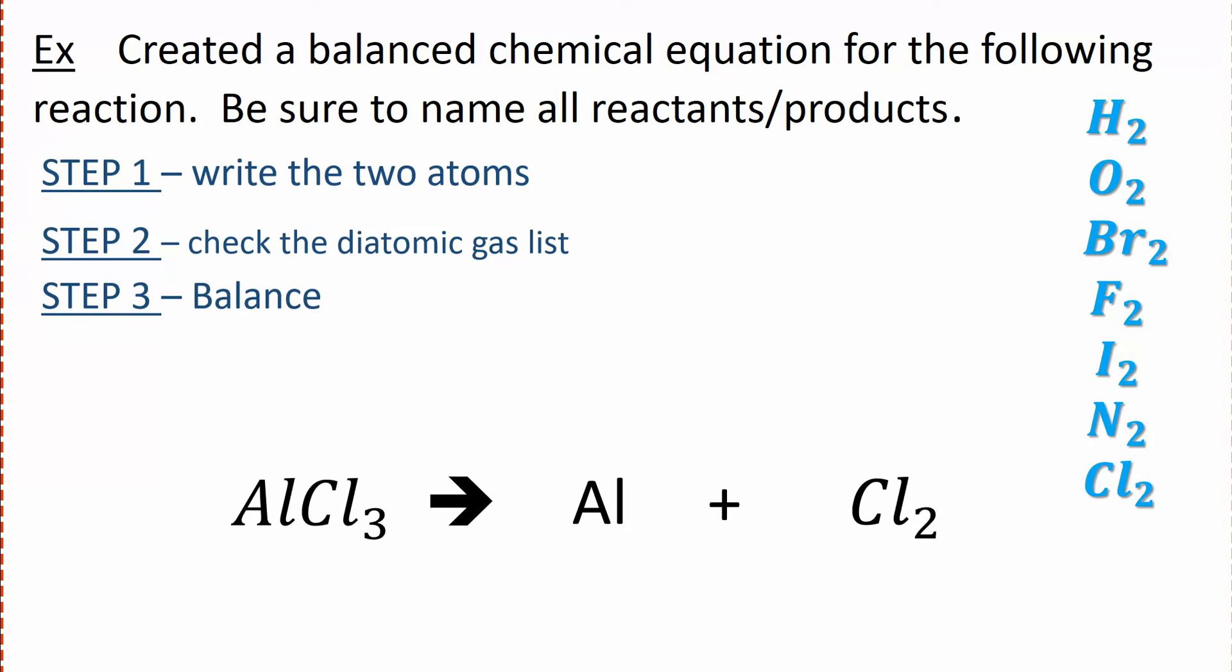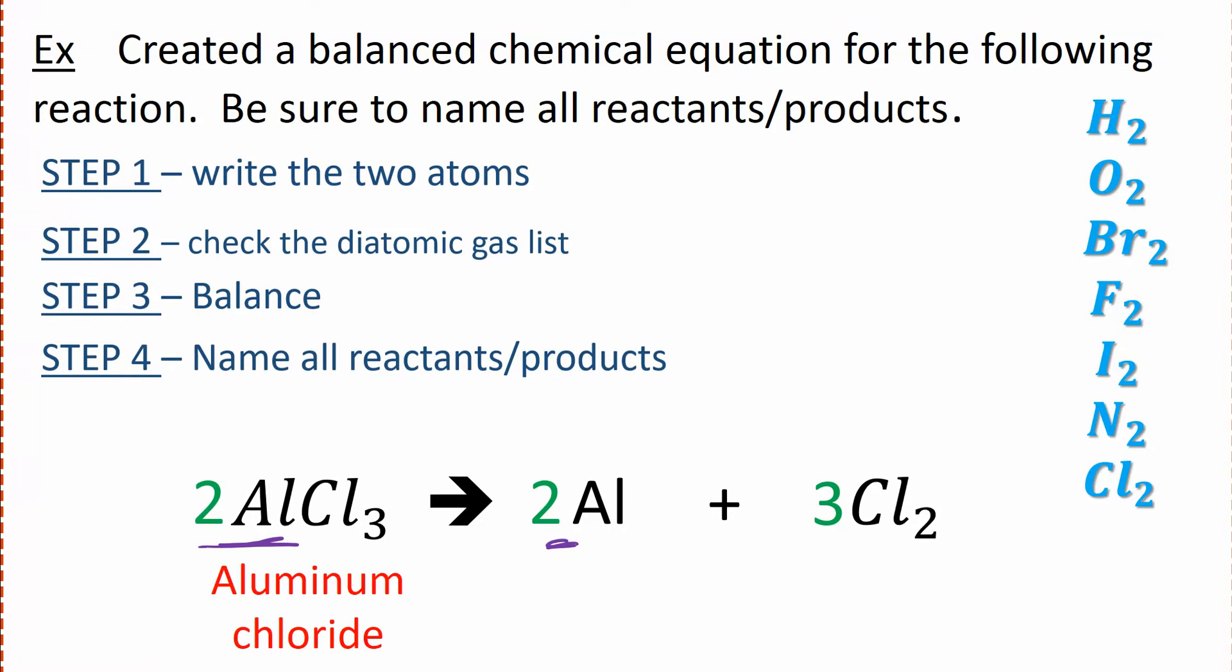Step three says we need to balance our equation. Now we need to be careful with this one. On the right-hand side we've got two chlorines, and on the left-hand side we have three chlorines. It's like saying two times three is six. We want to get six chlorines on either side. What number do we put in front of Cl₂ to give us six? That's going to be a three. We need to put a two in front because that will multiply to give us six chlorines on the left-hand side. We also have two aluminums, so we need to put a two in front of that.